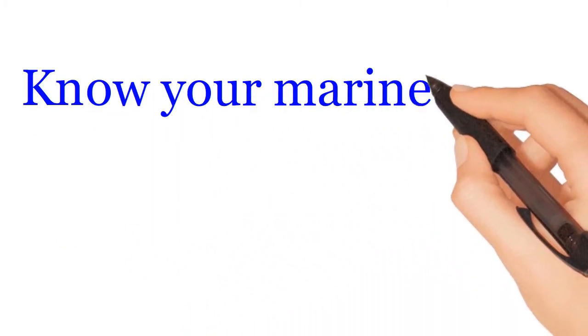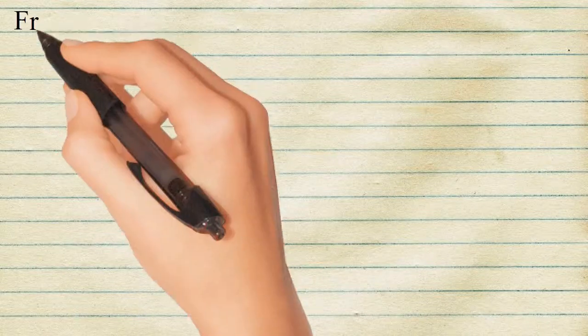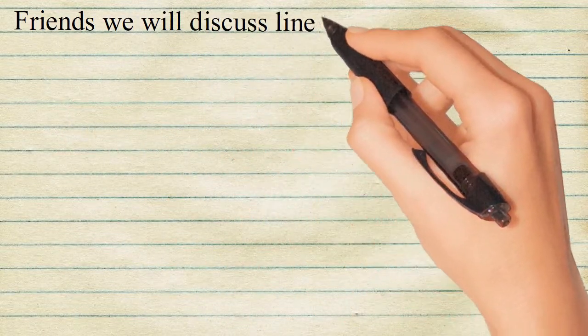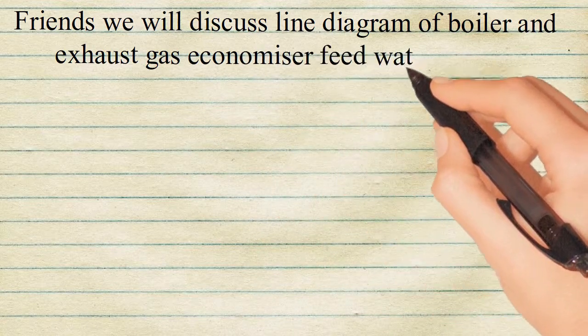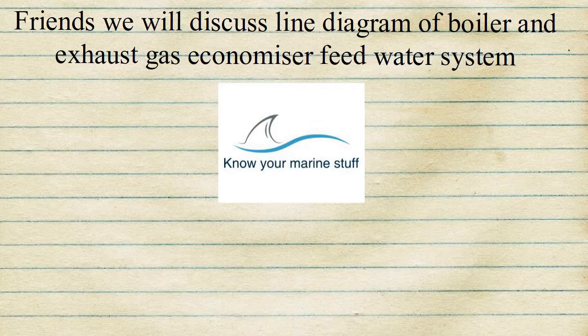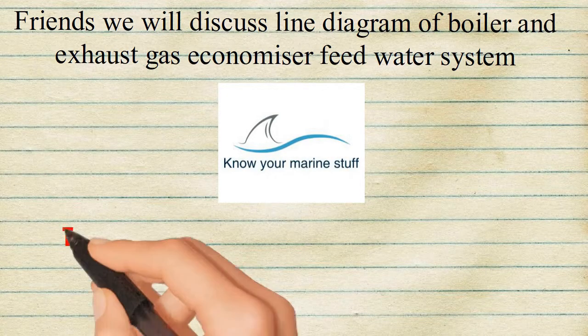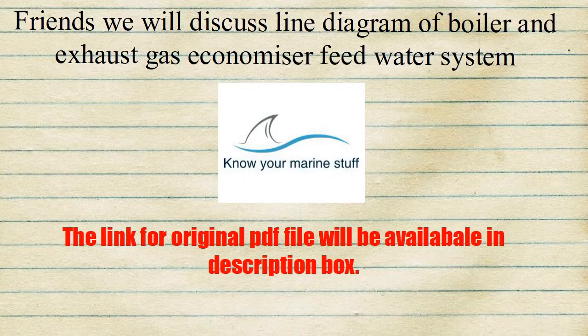Know Your Marine Stuff. Friends, we will discuss line diagram of boiler and exhaust gas economizer feed water system. This will help you to clear some of your symbols and concepts. The link for original PDF file will be available in description box.